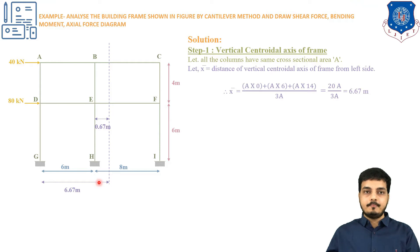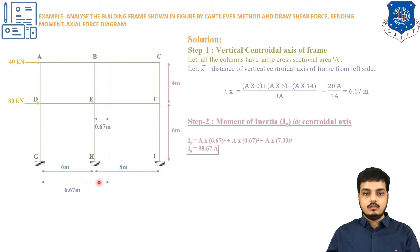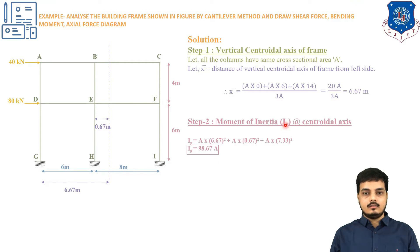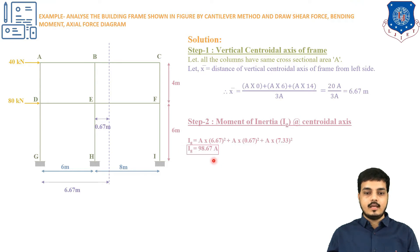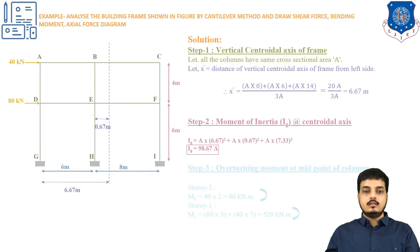With reference to this centroidal axis, we find the axial stress in the columns using the bending formula M/I = f/y = E/R. The moment of inertia at the centroidal axis is: Ig = A×(6.67)² + A×(0.67)² + A×(7.33)², which gives Ig = 98.3A.